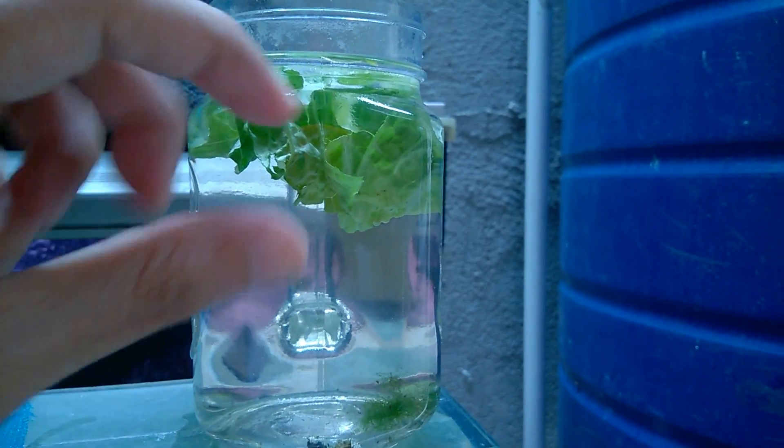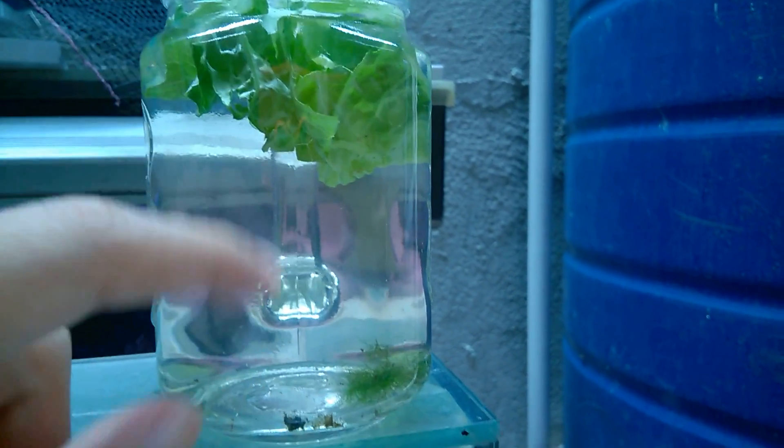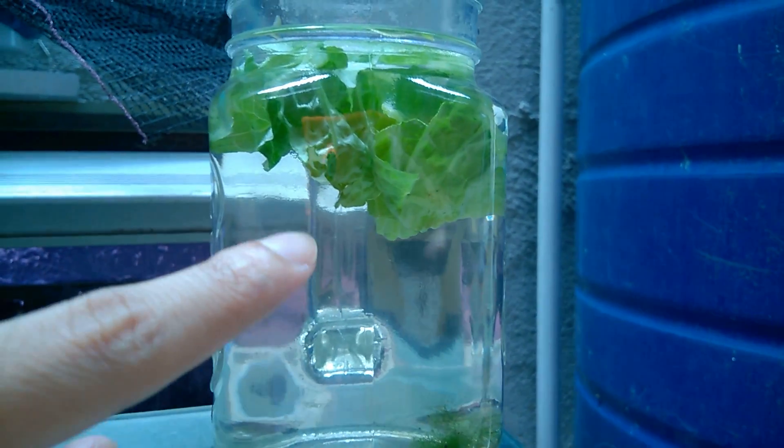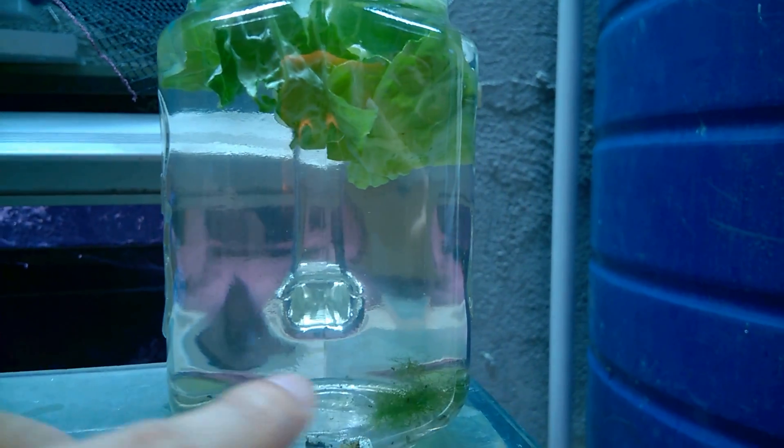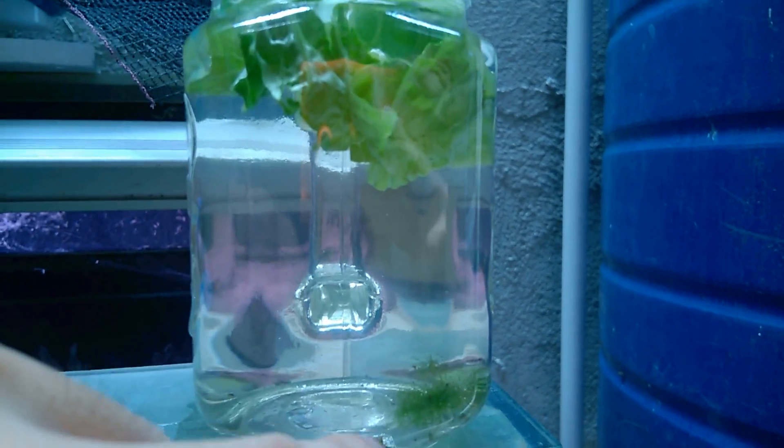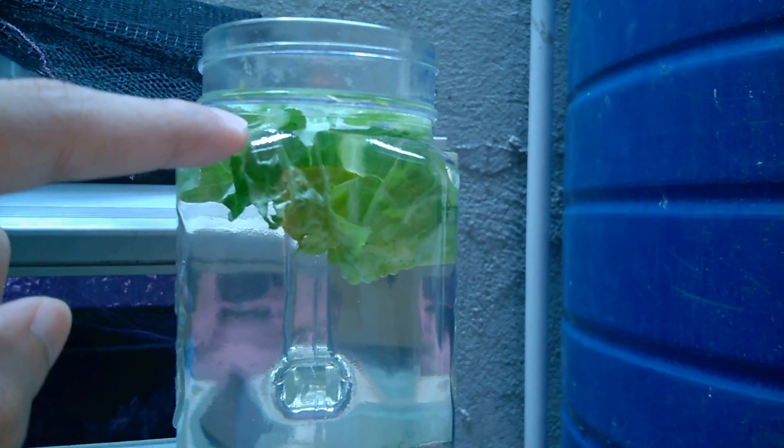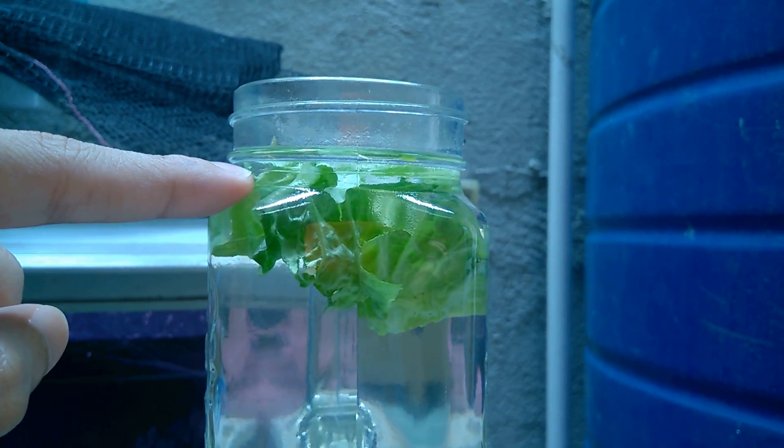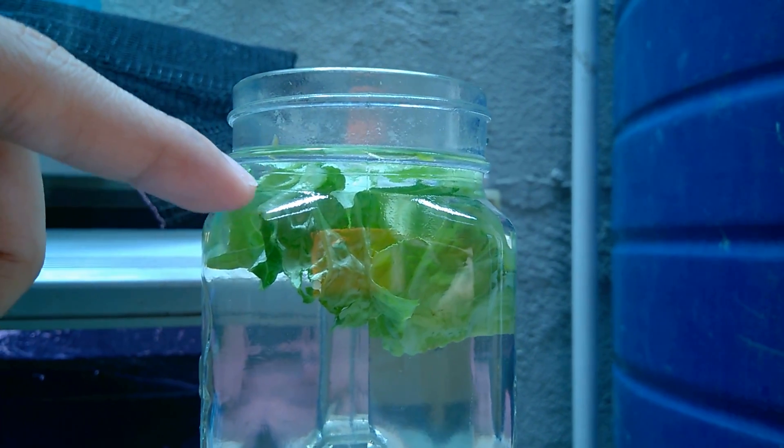I use around half a lettuce leaf, then add system water and some debris from the system water. Fill it up to the neck, then wait for the next three days.